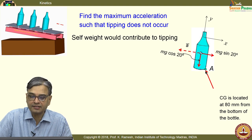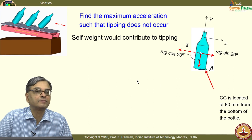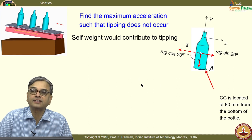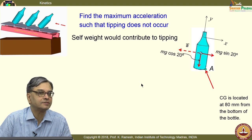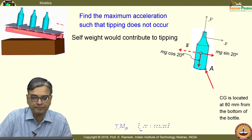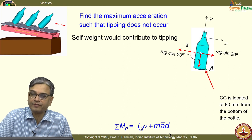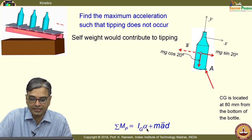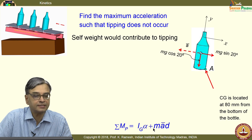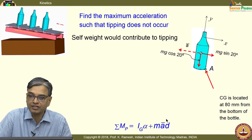It is desirable that we do it at point A, which is nothing but an arbitrary point P. We are going to invoke the equation: summation of M_P equals I_G alpha plus mass into acceleration of the mass point times distance d.